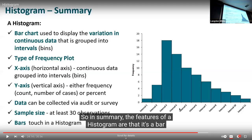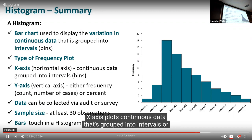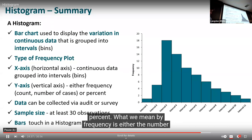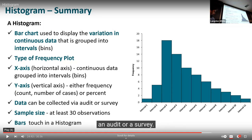This is a summary of histograms from a YouTube video. A histogram is a bar chart used to display variation in continuous data grouped into intervals, also called bins — particularly in Excel. It's a type of frequency chart. The x-axis plots continuous data grouped into intervals or bins, and the y-axis is the frequency or percent — meaning the number or count of cases.